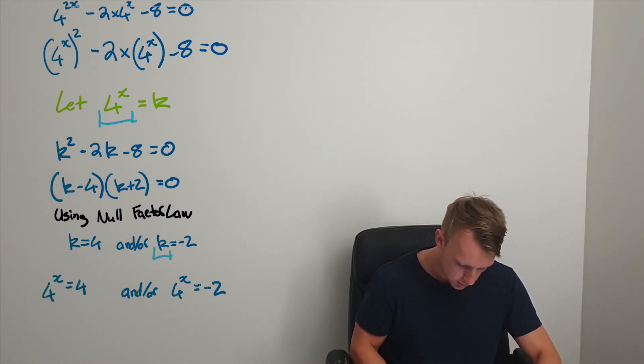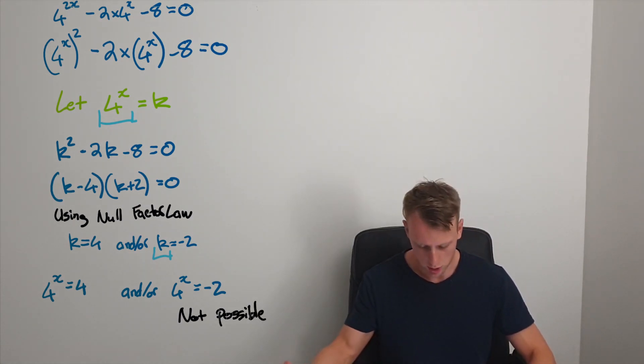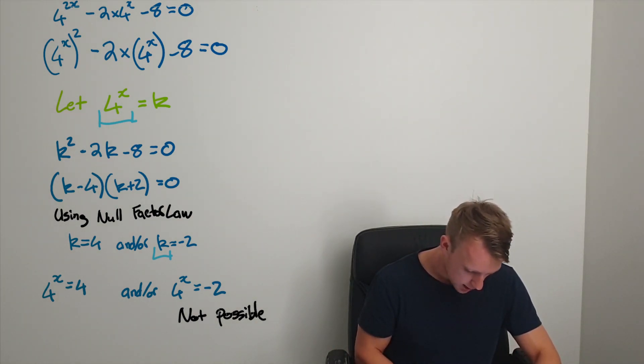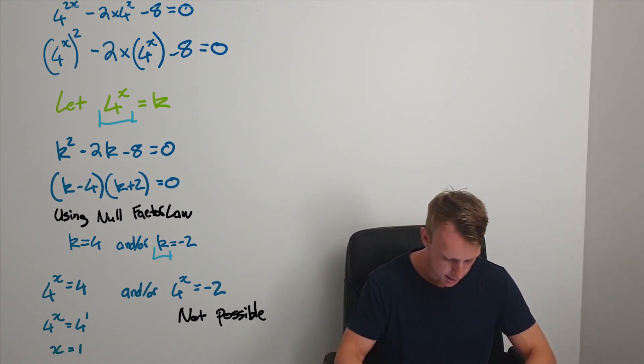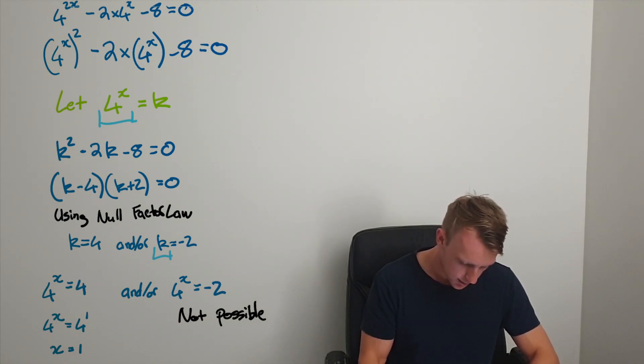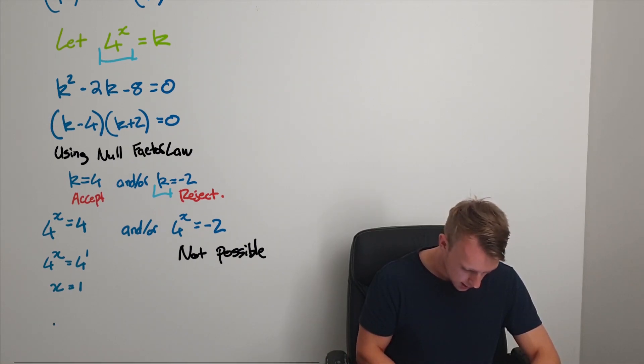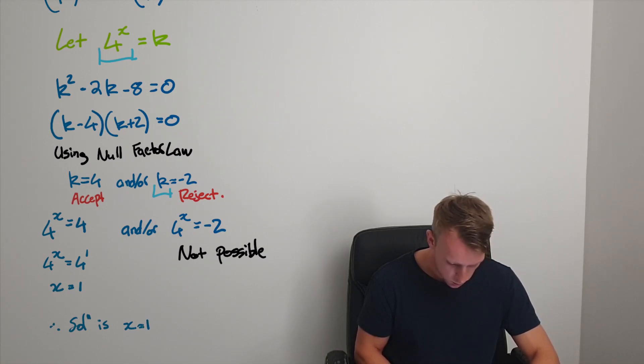This one over here, 4^x = -2, we can just write it off—that's not possible. There's no solutions on that side of the quadratic. But here, 4^x = 4^1, so x equals 1. We're going to accept that one and reject that one. Therefore, the solution is x equals 1.